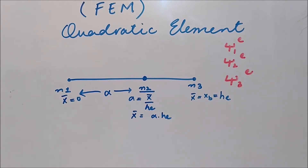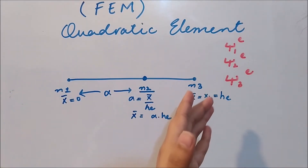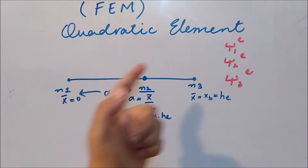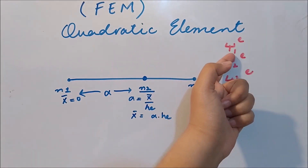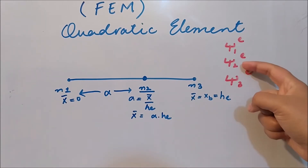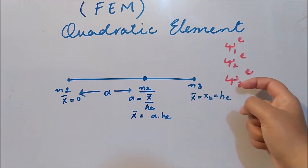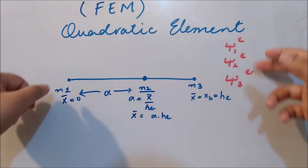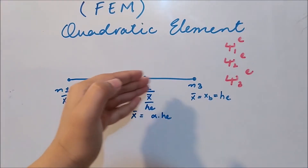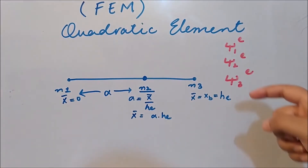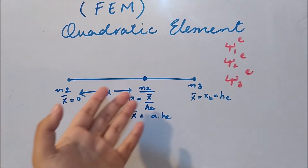As discussed in previous videos, we have three nodes, which implies we have three shape functions: ψ1 for node 1, ψ2 for node 2, and ψ3 for node 3 — where the subscript represents the node number and the superscript E represents the element level. ψ1 equals 1 at node 1 and 0 at nodes 2 and 3. ψ2 equals 1 at node 2 and 0 at nodes 1 and 3. ψ3 equals 1 at node 3 and 0 at nodes 1 and 2.